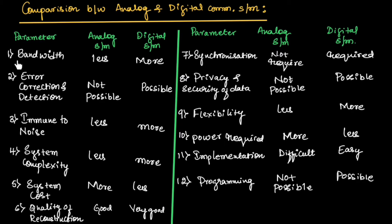First, let us take bandwidth. In case of the analog system, it has less bandwidth for transmission of data, and in the digital system, it will have more bandwidth compared to the analog system.